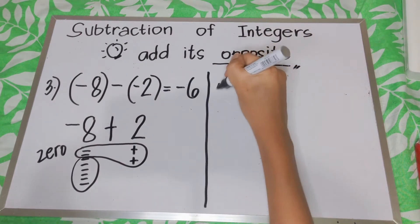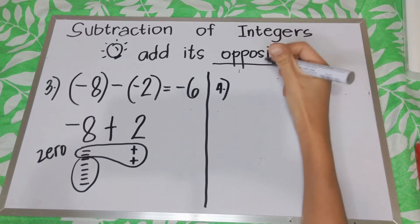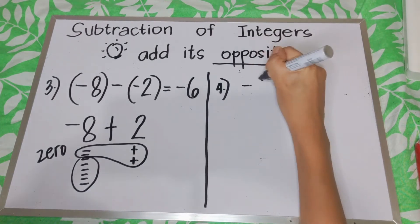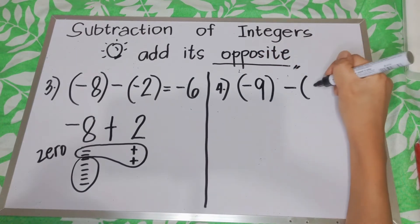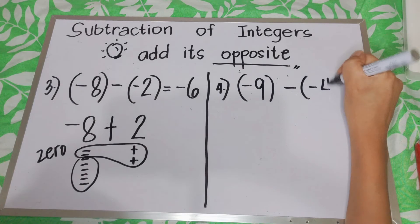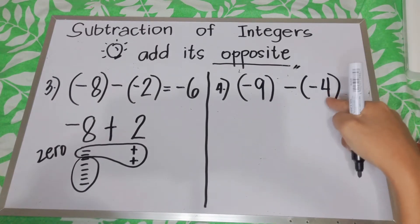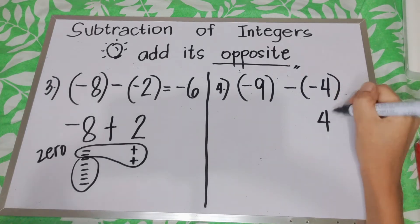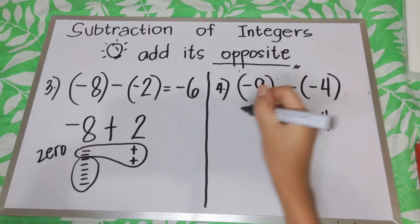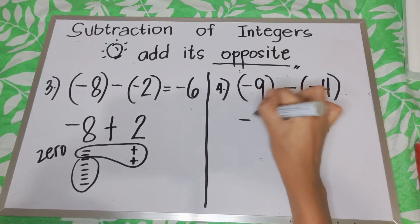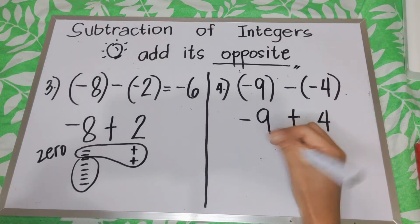Let us have example number 4: negative 9 minus negative 4. So what is the opposite of negative 4? We have positive 4. Then we are going to add it. Are we going to change negative 9? No, it will remain as negative 9.